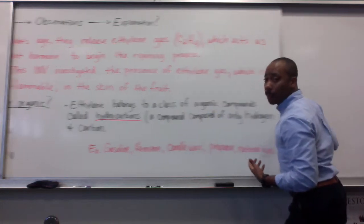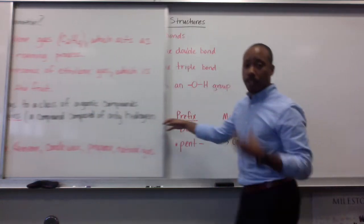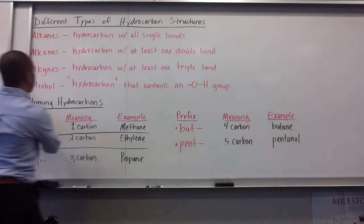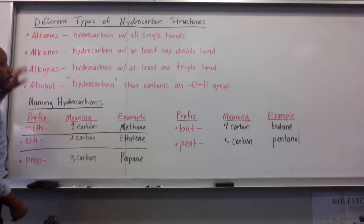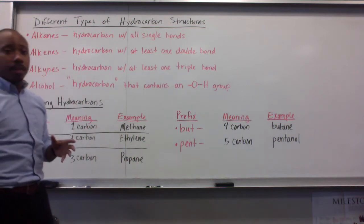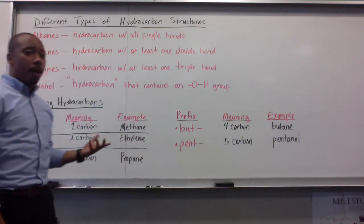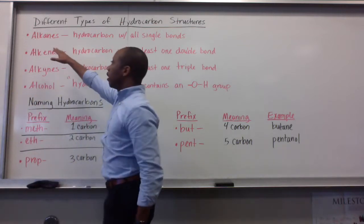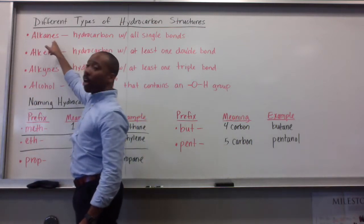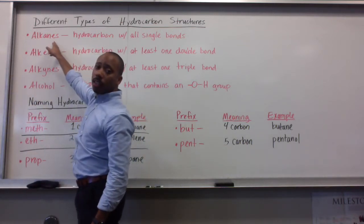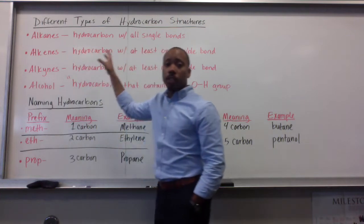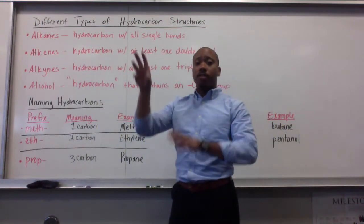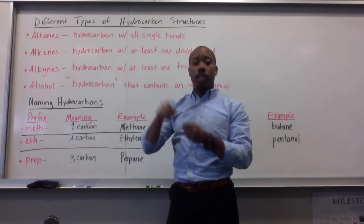Different hydrocarbons have different structures, so we're going to take a moment to talk about the structure of hydrocarbons. The first type we'll talk about are alkanes — A-L-K-A-N-E-S. These are hydrocarbons with all single bonds, so the carbons to hydrogens are all single bonded.